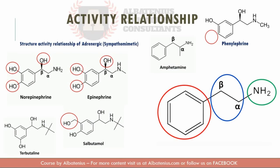When it comes to the sympathomimetics, the structures have three parts: the phenyl ring, which is part one; the blue circle, which is the ethylene linkage; and then the amide.